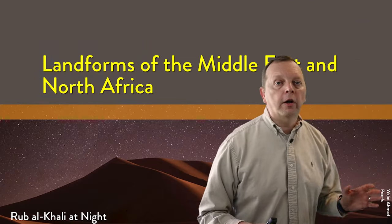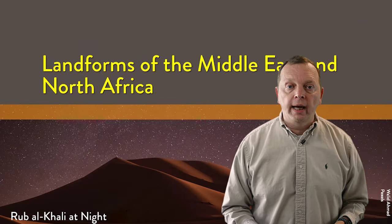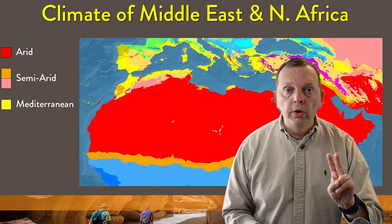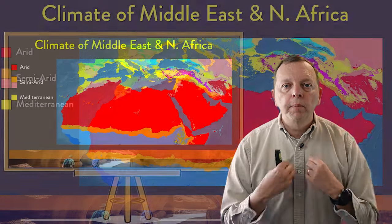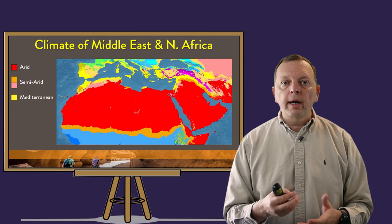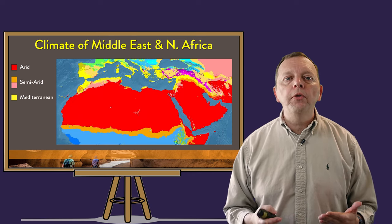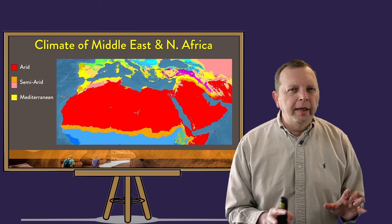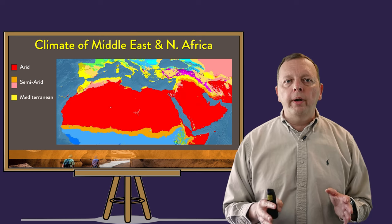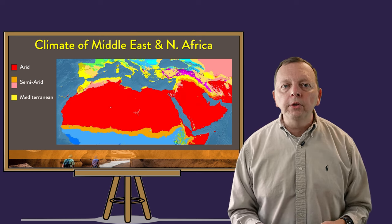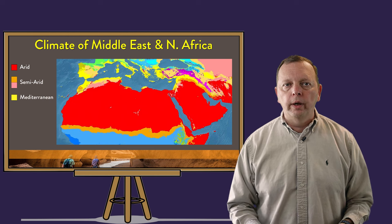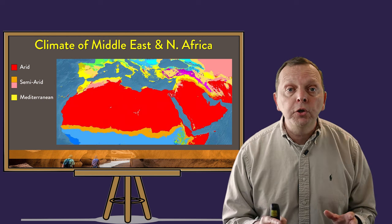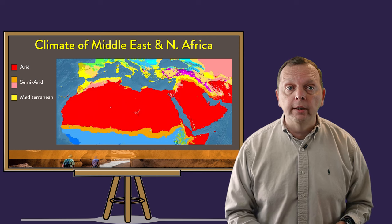Before we talk about the region's landforms, let's look at its climate. The region's climate can best be described in just two words: hot and dry. From personal experience, during a 2003 trip to Iraq, a personal thermometer read 132 degrees — though temperatures in Iraq and other areas of the Middle East routinely go over 120 degrees. In 2016, Kuwait and southern Iraq had official highs of 129 degrees.